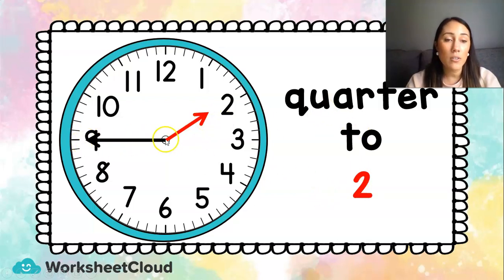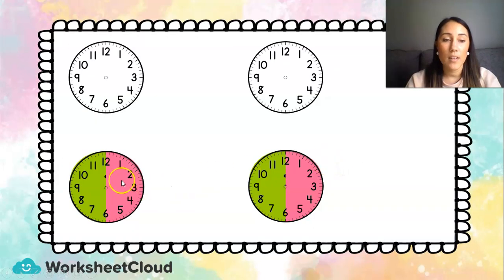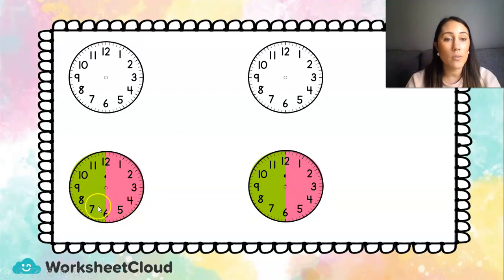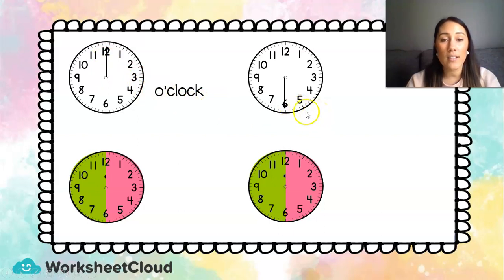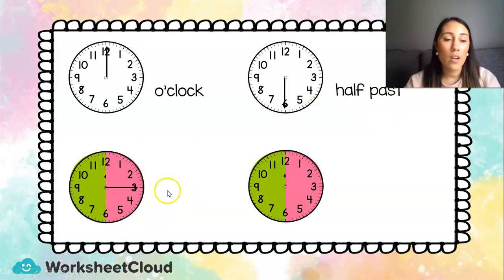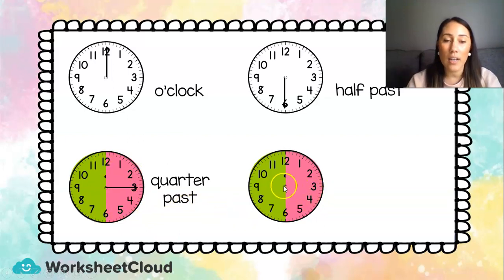It is quarter to 2. Now, this side of the clock is the past side, and this side is the to side. Let's remember: when the long hand is on the 12, it is o'clock. When the long hand is on the 6, it is half past. When the long hand is on the 3 — remember, this is the past side — it is quarter past. And when the long hand is on the 9, it is quarter to.